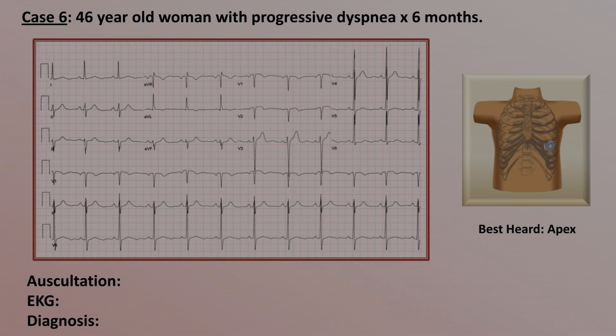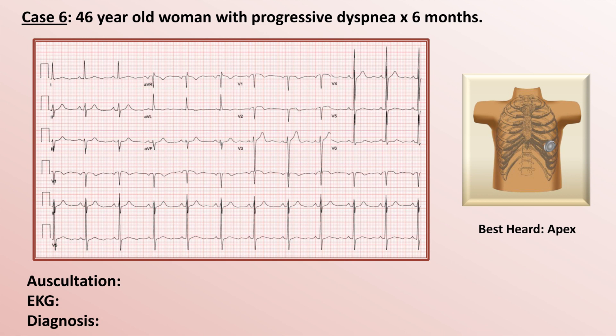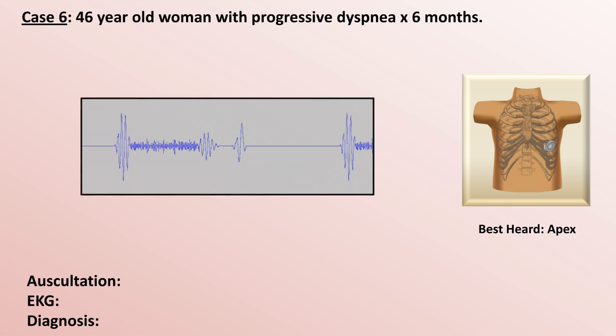Case 6: a 46-year-old woman with progressive dyspnea for six months. Here is what is heard at the woman's apex. Most of you probably hear the relatively high-pitched systolic murmur. What shape does it have? It's uniform or holosystolic. But is there anything else there besides the murmur? Listen again closely — do you hear another sound thrown in?